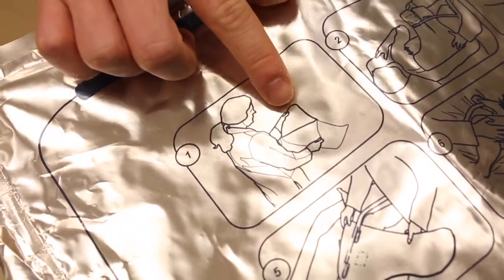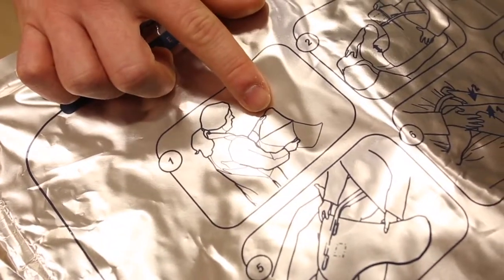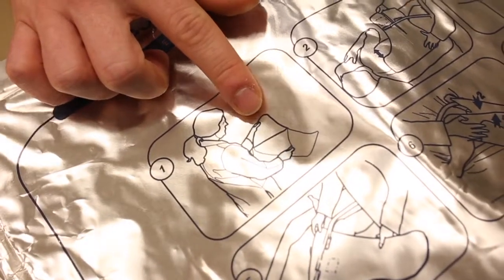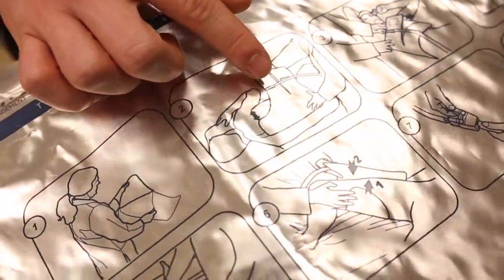These are the medium pads. Pull them out of the packaging and remove the protective cover on the adhesive. There are four pads: two for the thighs and two for the back and chest.